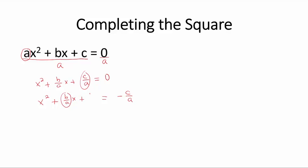So we divide the linear term by two and then we square it. If we add it to one side, we must add it to the other. Now this factors as (x + b/2a)².